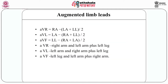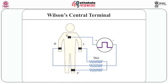Now we are going to talk about augmented limb leads. The exploring electrode forms a positive input as the right arm electrode, left arm electrode, or left leg electrode for AVR, AVL, and AVF respectively. The reference potential for the augmented lead is formed by connecting the two limb electrodes other than the exploring electrode. AVR equals right arm minus (left arm plus lower limb) divided by 2. AVL equals left arm minus (right arm plus lower limb) divided by 2. AVF equals lower limb minus (right arm plus left arm) divided by 2.